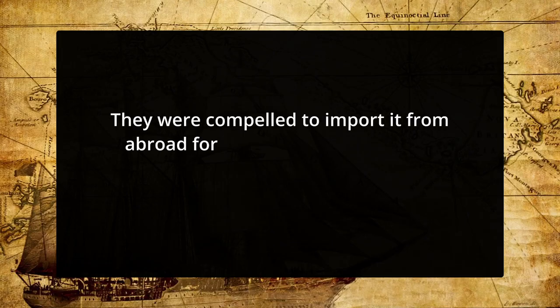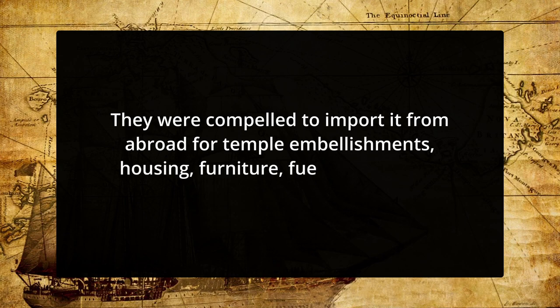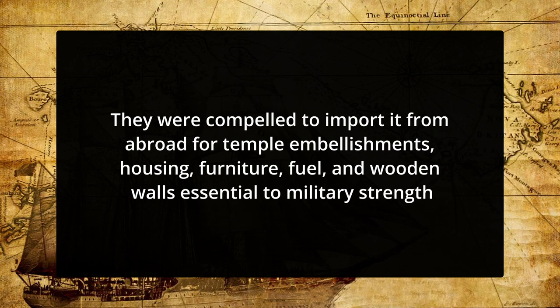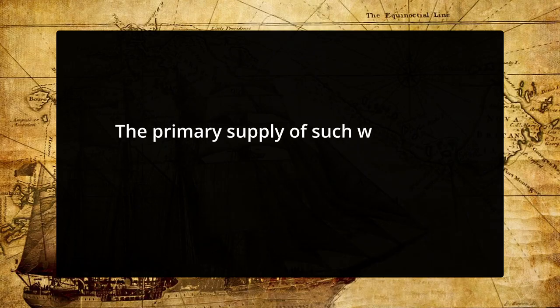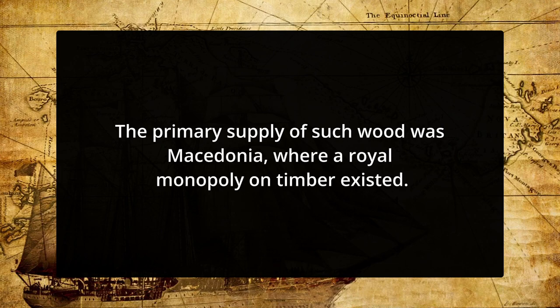Regarding the timber trade: the central and southern Greek polis lacked adequate wood resources throughout the classical era. Thus, they were compelled to import timber from abroad for temple embellishments, housing, furniture, fuel, and wooden walls essential to military strength. The demand for ship timber grew much more in the 4th century. Like grain, timber had to be imported by commercial ships from a great distance. The primary supply of such wood was Macedonia, where a royal monopoly on timber existed. For every Greek polis aspiring to be a naval power, massive imports of ship wood were required, and other states besides Athens negotiated with Macedonian authorities for timber.